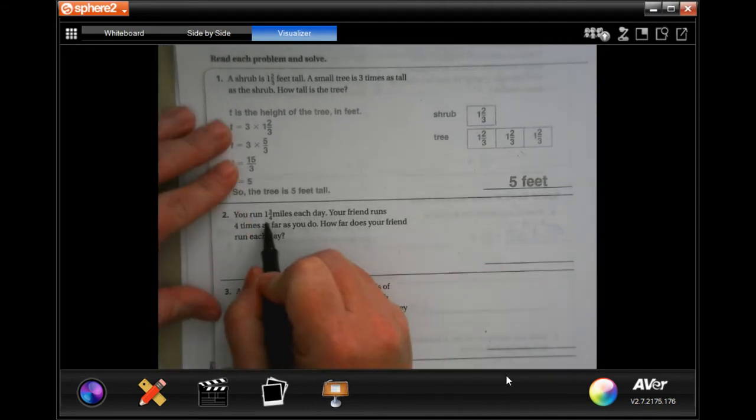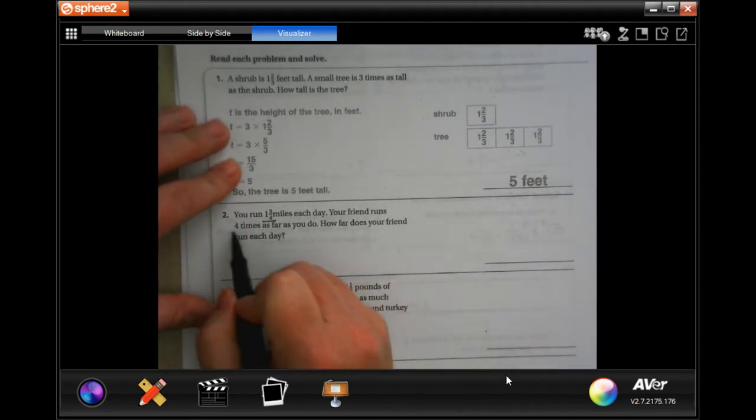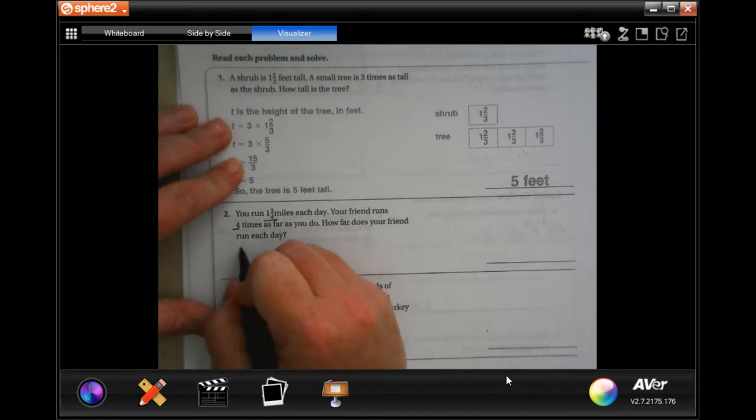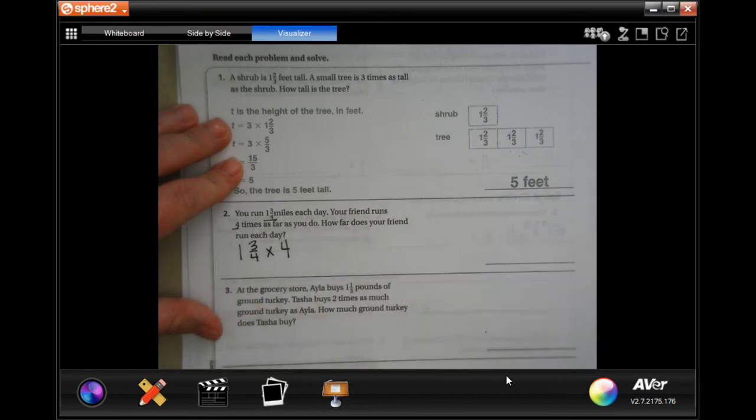So, this says you run one and three quarter miles each day. Your friend runs four times as much as you do. So, one and three quarters times four.